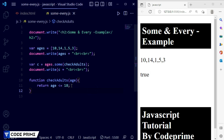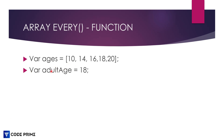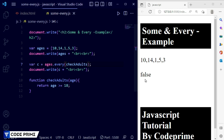So this is basically how some works — you can create a child test or an adult test. Now we're going to learn the every method and how it works. It works similarly to some, so I'll use the same setup with the ages variable and the adult test. The small difference is: for every, the condition must match all array elements. I just change some to every in the code and save it.